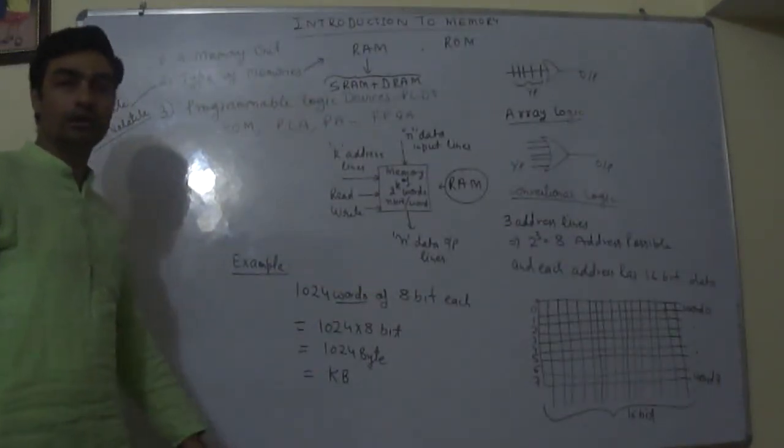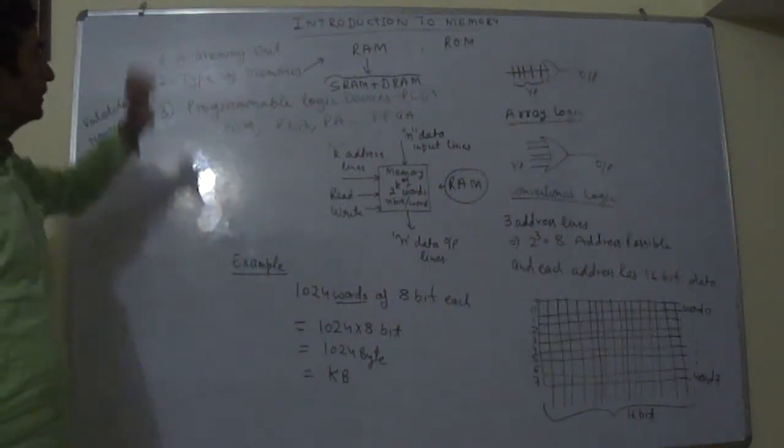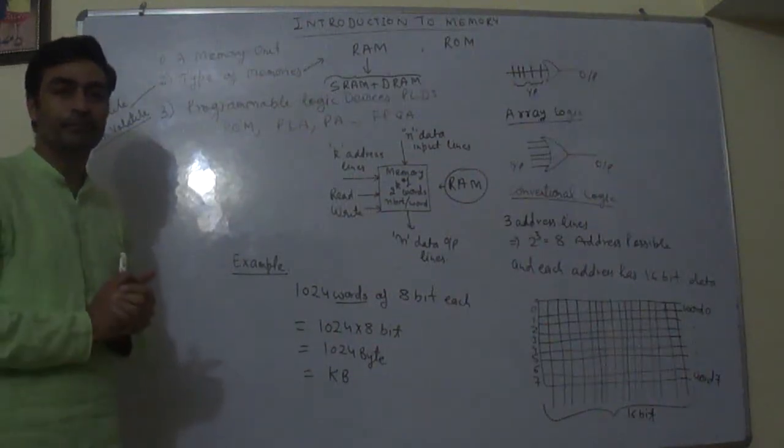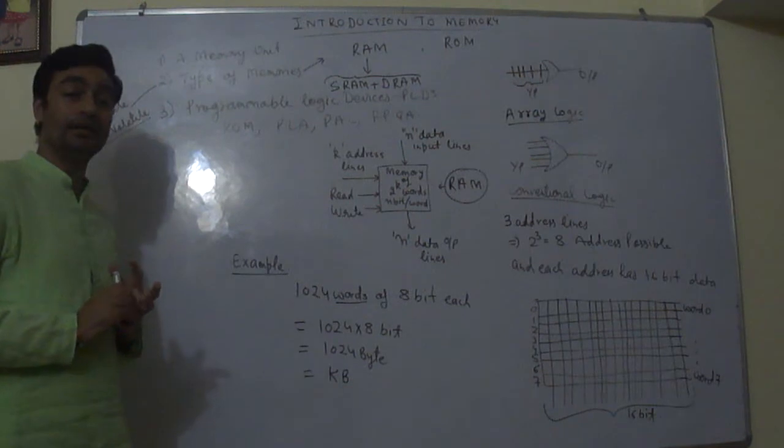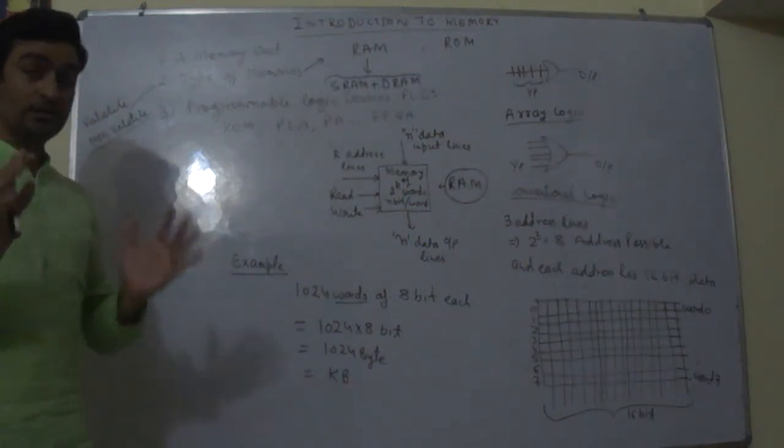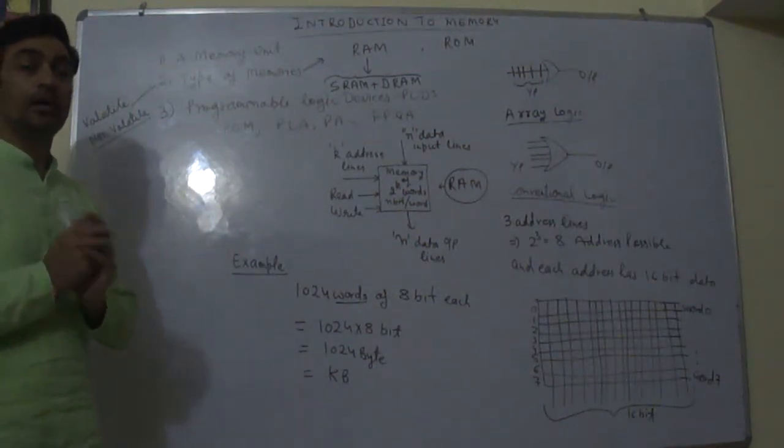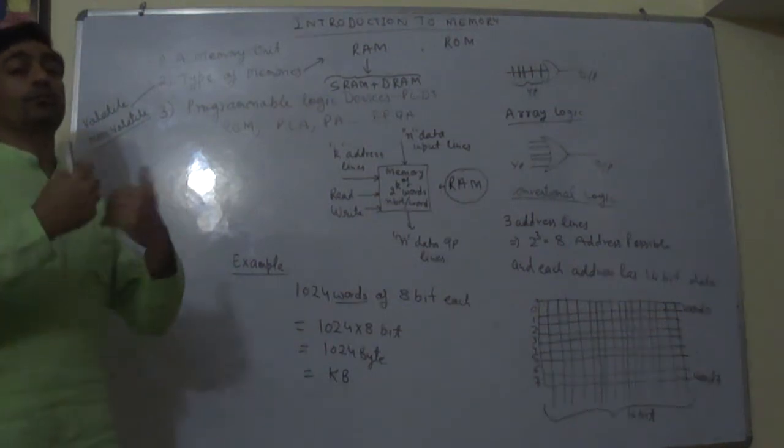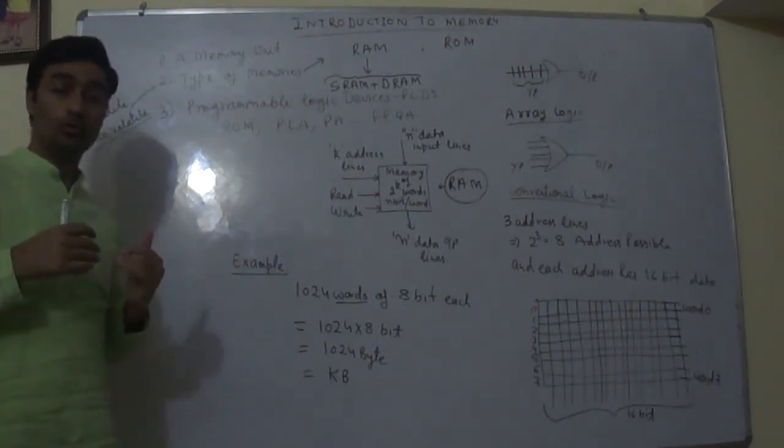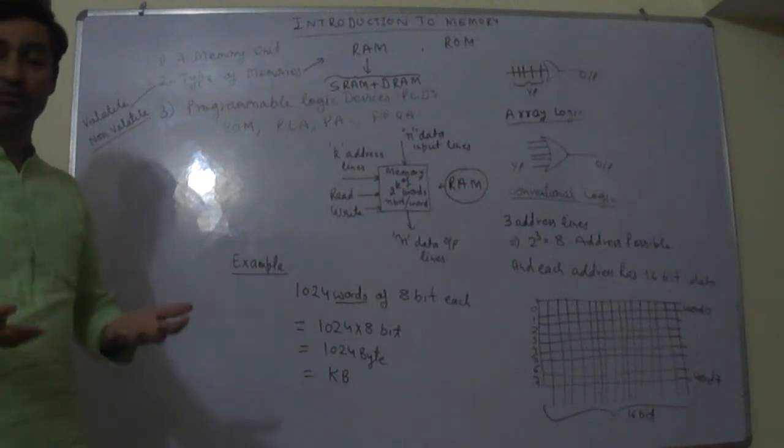A memory unit is basically a device which is used for storing information and from where we can extract information. So what is the purpose of extracting information?